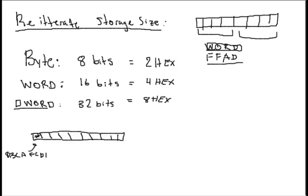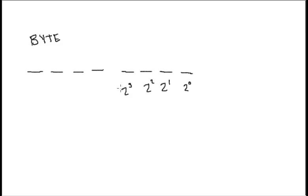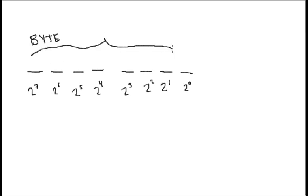Now I'm going to reiterate some stuff about byte size. A byte — you can think about that as having eight placeholders. The first one down here is the two-to-the-zero slot; you can either have something there or not. That goes for any of these: two to the first, two squared, two to the third, two to the fourth, two to the fifth, two to the sixth, and two to the seventh. So whenever we think about having eight bits, the highest order of two is the seventh order.